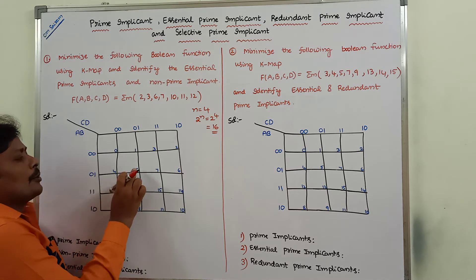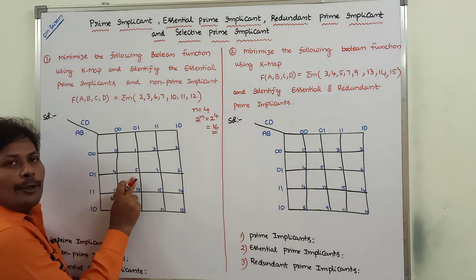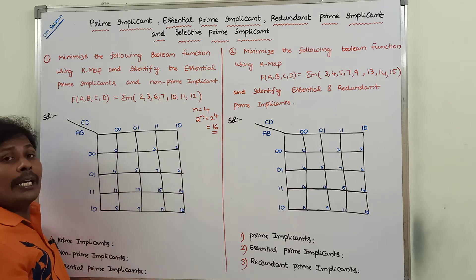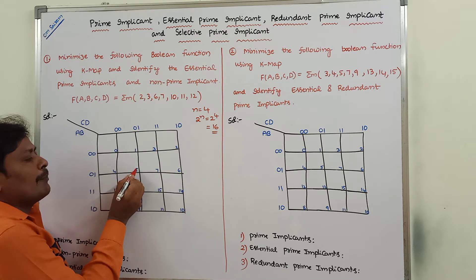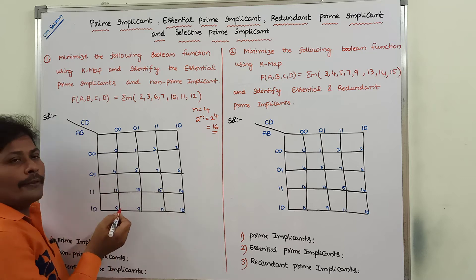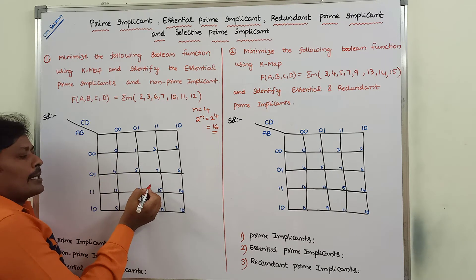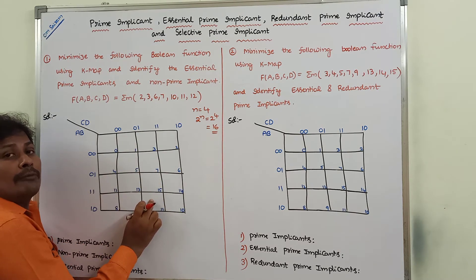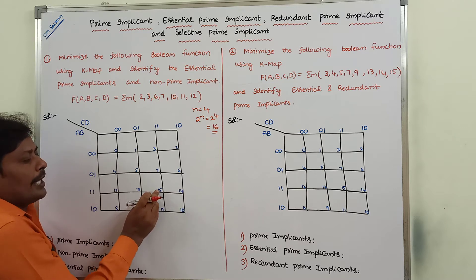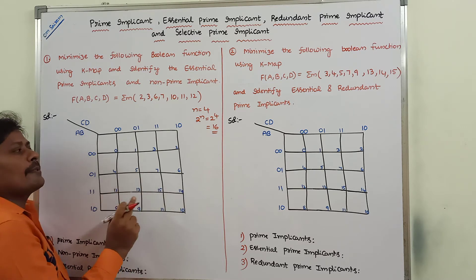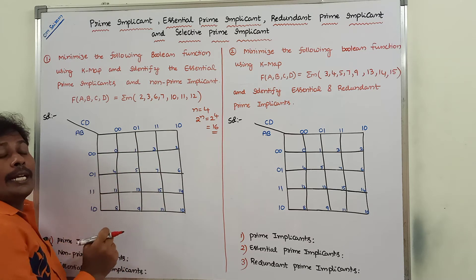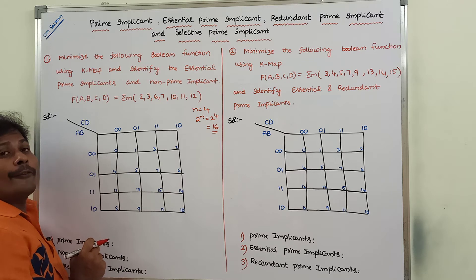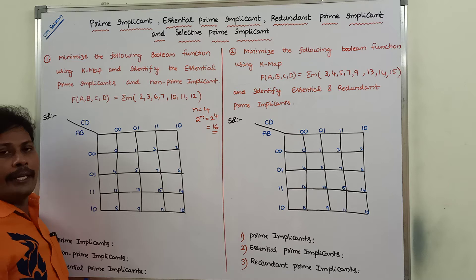For example, taking this cell: row-wise binary value is 0, 1 and column-wise binary value is 0, 1, giving 0101, whose decimal equivalent is 5. So 5 is written at the corner of this cell. Taking another cell: row-wise 1, 1 and column-wise 1, 1, giving 1111, whose decimal equivalent is 15. So 15 is written at the corner of that cell. In this way, each cell is labeled with the decimal equivalent of its row and column binary values.